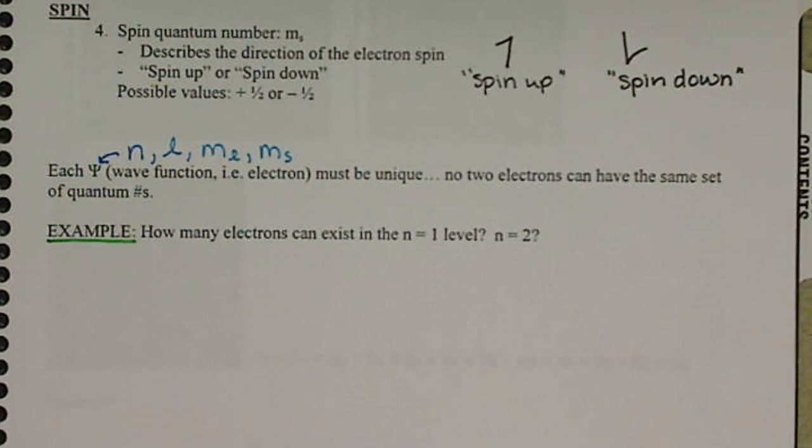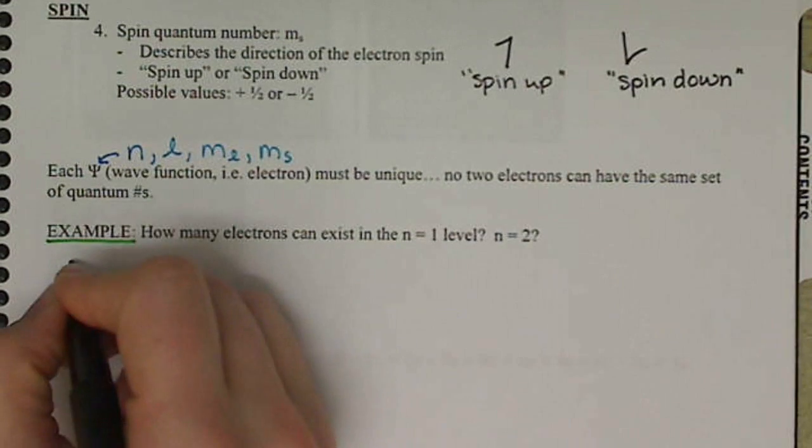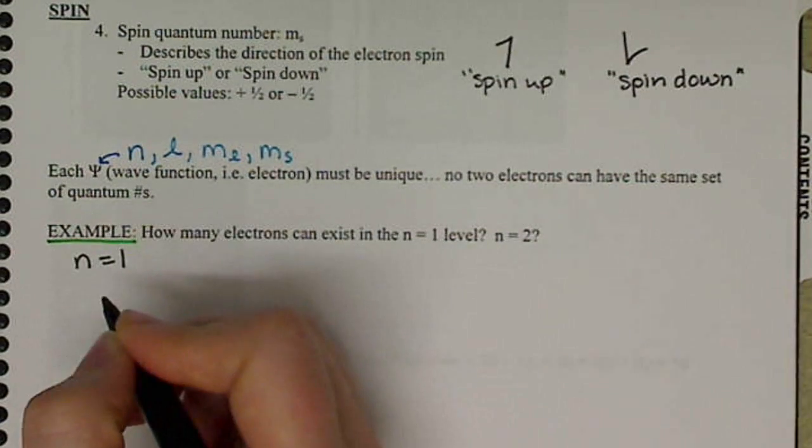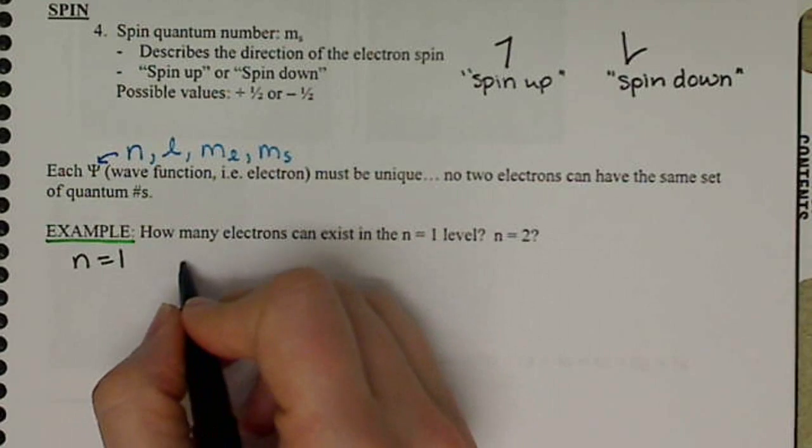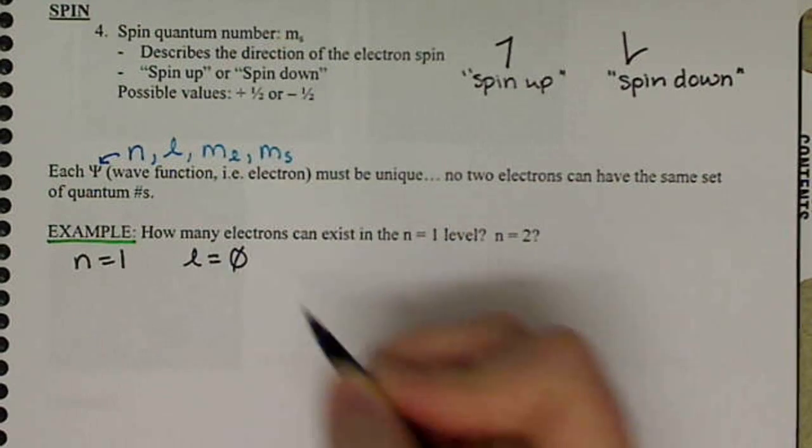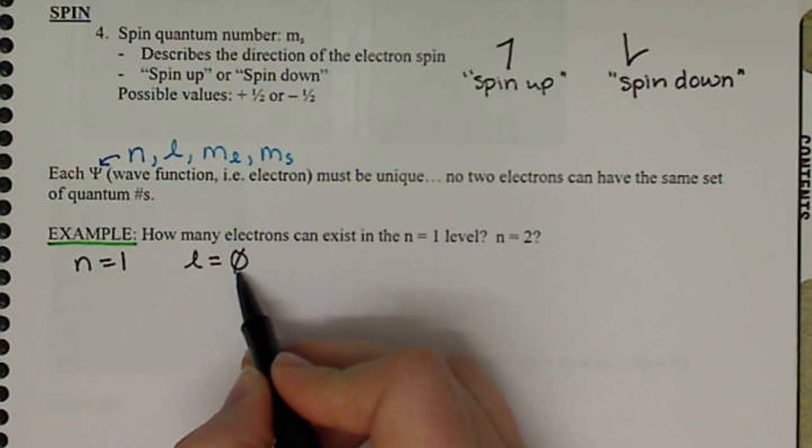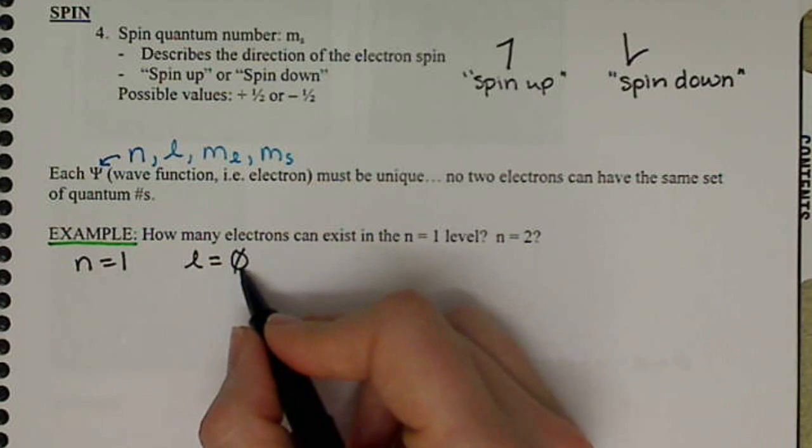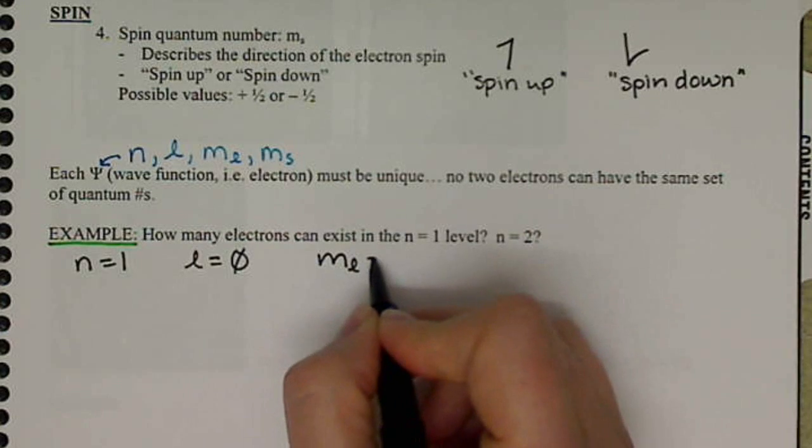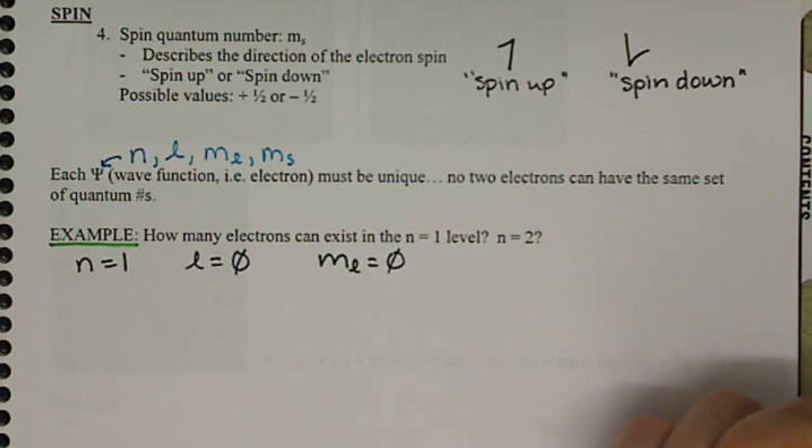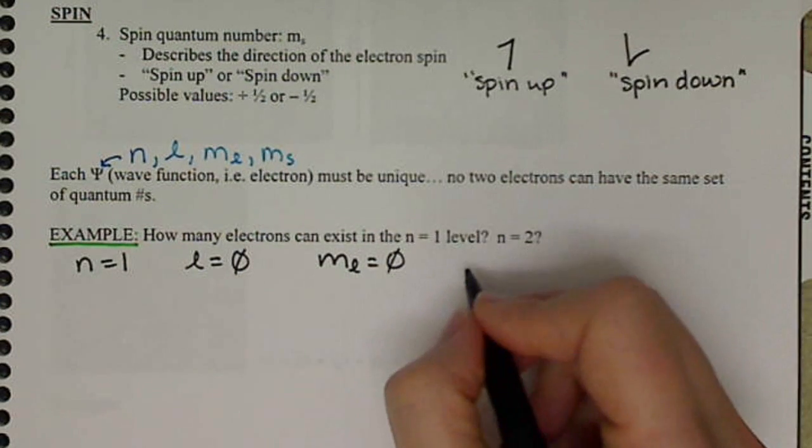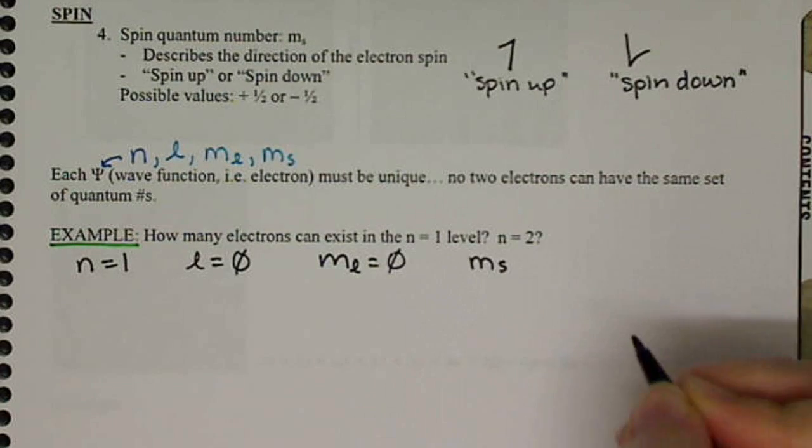So in the N equals 1 level, if N is equal to 1, then L, which can equal N minus 1, only has the option of being 0. If L is equal to 0, M sub L only has the option of being 0.